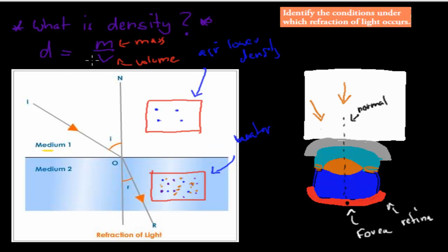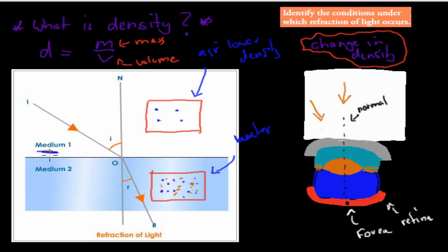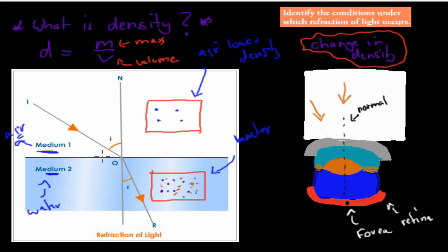The reason why density is important is because light is refracted when there is a change in density. If there's a change in density between two mediums, then refraction of light will occur. A medium is just anything where something can be found — water is a medium, air is a medium. Anything that light can travel in is a medium. So if light travels from air into water, that's a change in medium, and those mediums have different densities — air has low density, water has high density — so bending of light occurs.